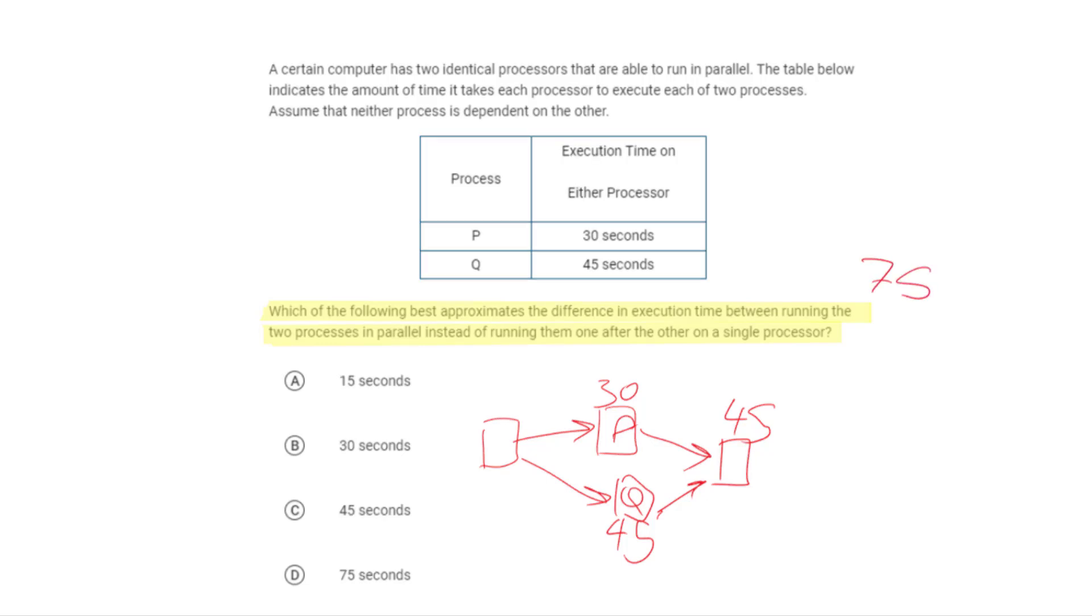So if we do them parallel, it'll take 45. So we're comparing 75 versus 45. That's a difference of 30. It's nice and simple. We just subtract these. The difference in time is just the bigger time minus the smaller time. So it's just 30. Therefore, the approximate difference in execution time is 30 seconds. When you see a problem like this, avoid trying to take shortcuts. Get the two numbers, get the sequential and get the parallel, and actually just straight-up compare them.